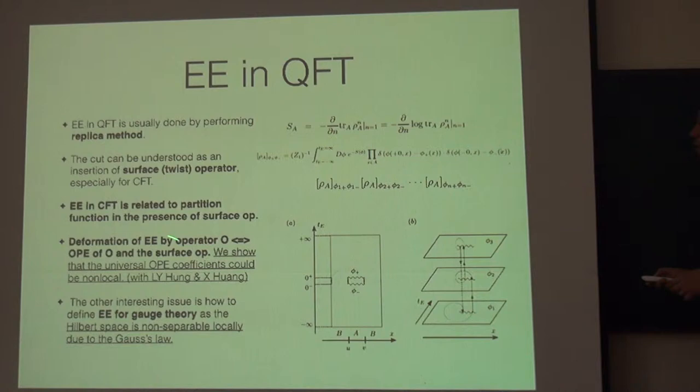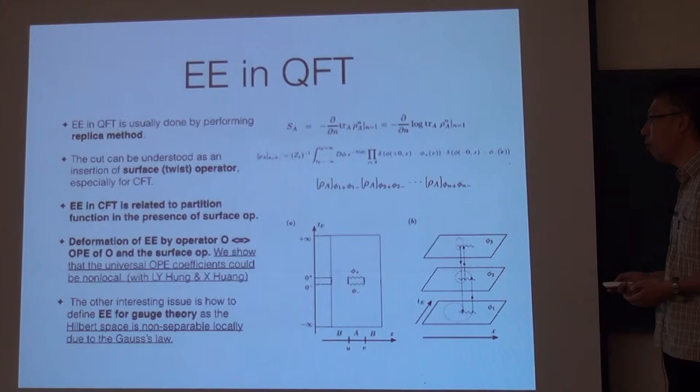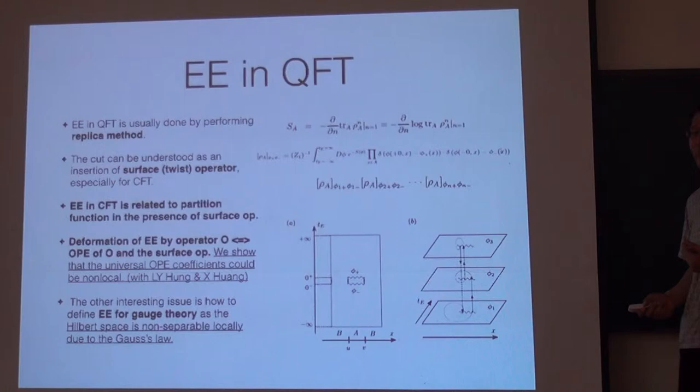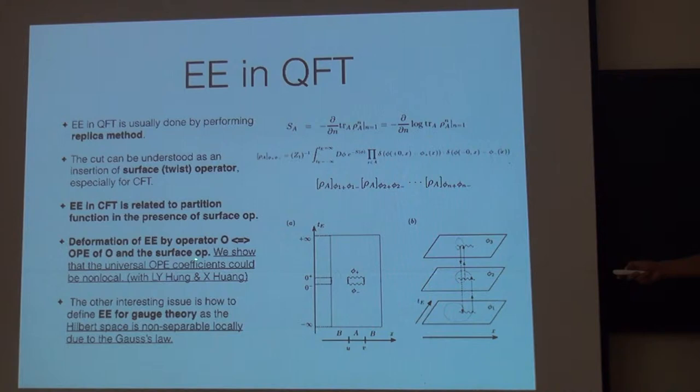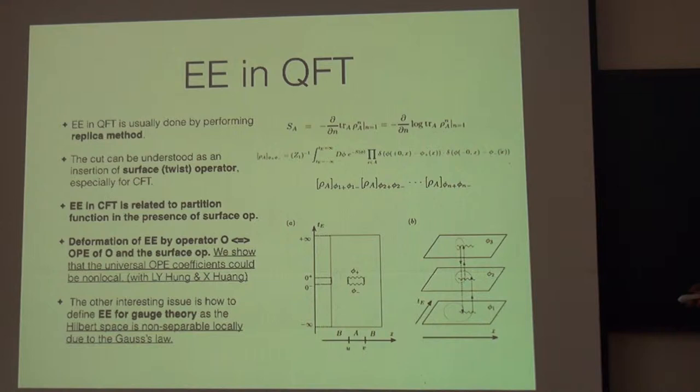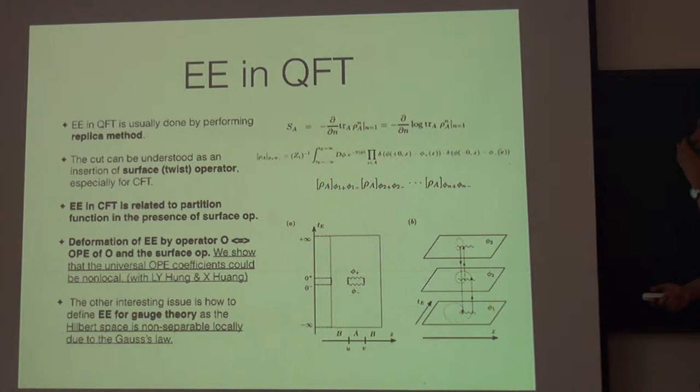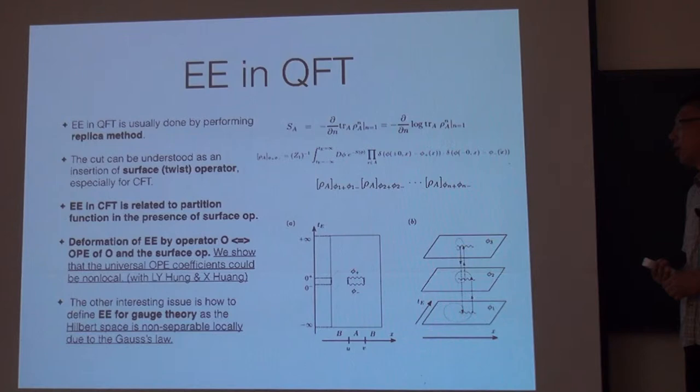And in some sense, you deform the operator, deform the entanglement entropy by inserting some operator. In some sense, you are calculating OPE of this O and the surface operator, means that this entanglement region actually can be understood as a surface operator. Usually our operator is a line operator, but in the entanglement entropy case, in some sense, we need to consider the surface operator and its OPE with the other operator. And recently we started, we find that this surface operator and its OPE with the stress tensor, is not local. So it's not very clear what this means.